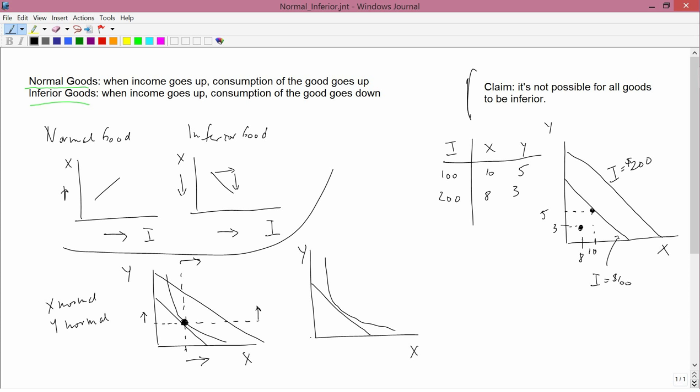So the new optimal point needs to be between these two open circles. I can draw an indifference curve to satisfy that criterion in this way. And then the new point would be here. And indeed, you do have now more X and more Y corresponding to the increase in income.